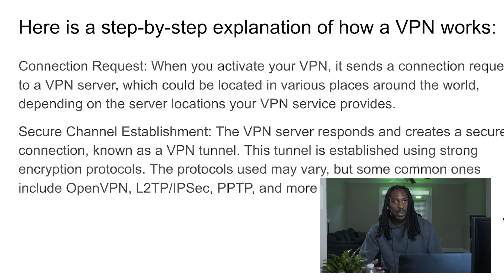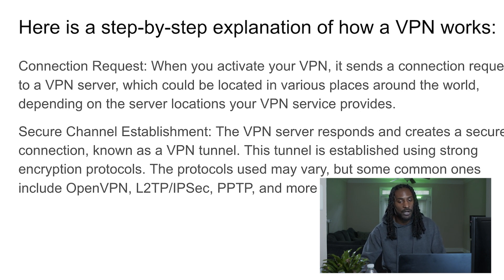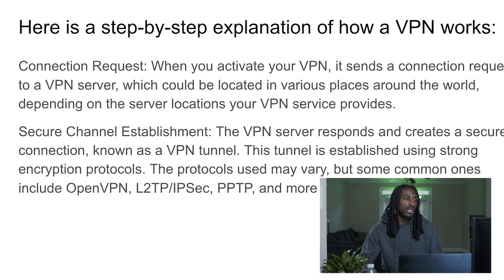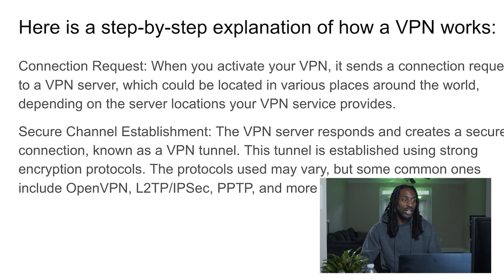VPN uses the internet to do this. So if you have a bad WiFi connection, that's usually the first step in troubleshooting — maybe disconnecting and reconnecting to a stronger WiFi, or powering off your router and powering it back on. If you're at home, that's a way to troubleshoot VPN issues. Always understand that VPN and your WiFi, your internet, your wireless service are all connected.